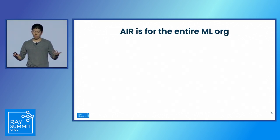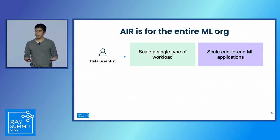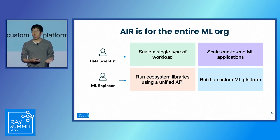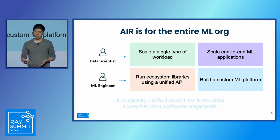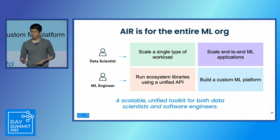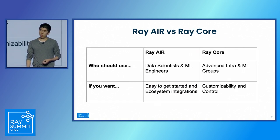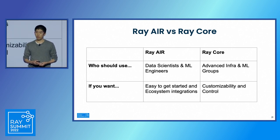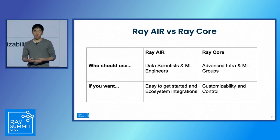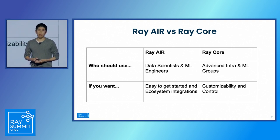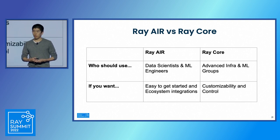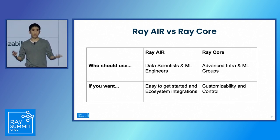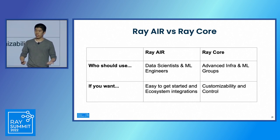Air is really for the entire ML organization. For data scientists, it enables simple scalability of particular workloads or entire ML pipelines. For ML engineers, it provides unified platform abstractions that can be used to easily onboard and integrate necessary tooling. In short, Air is a scalable and unified toolkit for both roles. If you're a data scientist or ML engineer, you probably want to start with Air, which is easy to get started with and has APIs to interact with the ecosystem. But if you're pushing the bleeding edge, building new things at hyperscale or specialized use cases, you might want to consider Ray core, which provides more customizability and control. Importantly, these work well together and you can use one or both.